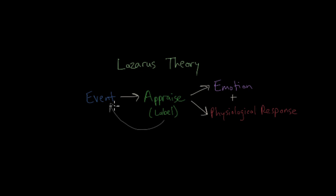So we have an event. Let's say, again, holding your cat. In the Lazarus theory, next comes appraisal, or labeling the situation. And what the Lazarus theory says, if we label the situation as bad, the emotion will be negative. And if we label the situation as good, the emotion will be positive. So one of the differences here is that how we label the event is completely dependent on personal experience, or cultural differences and situational factors. And once this appraisal has occurred, then the emotion will occur simultaneously with the physiological response.